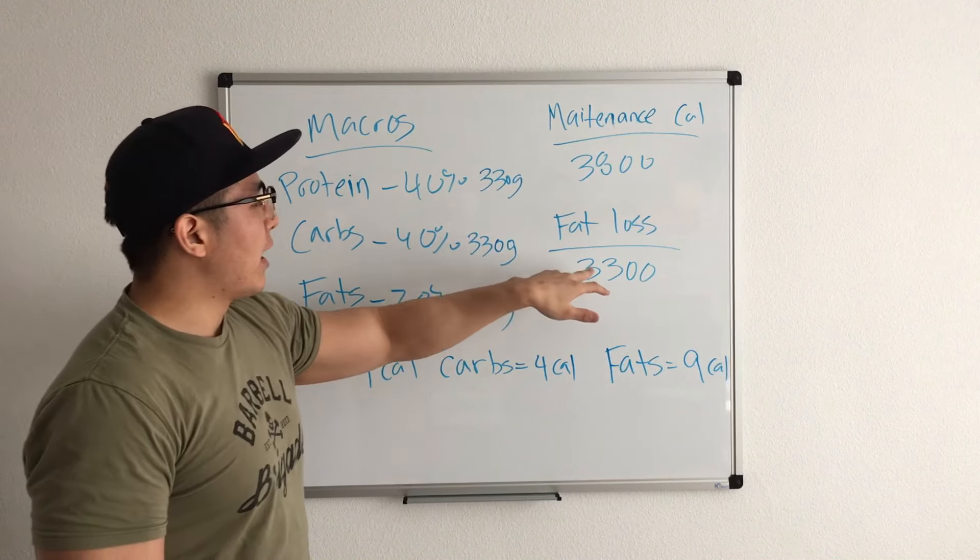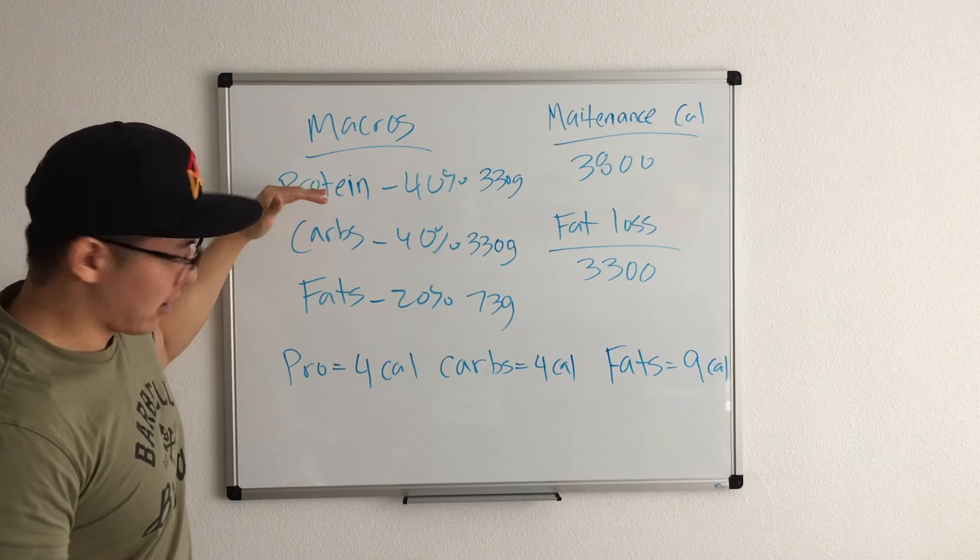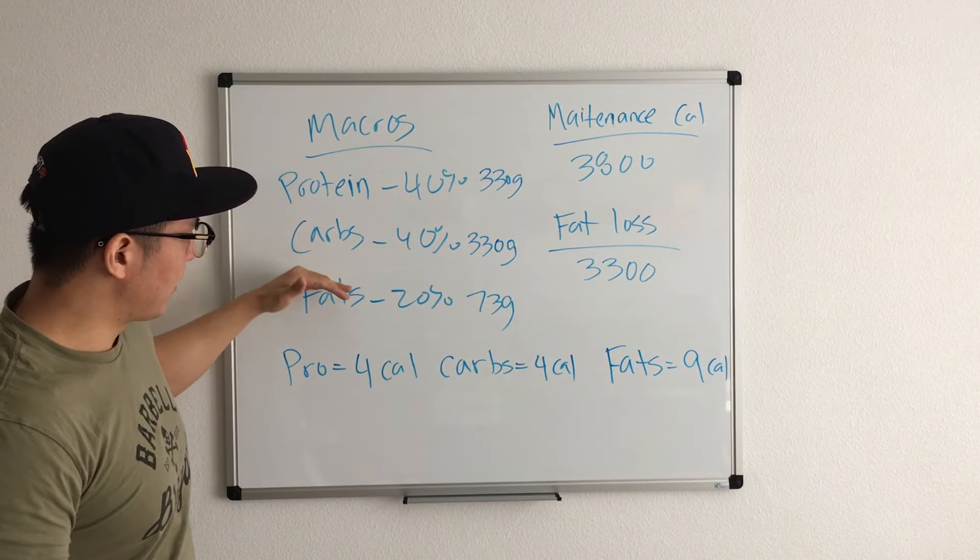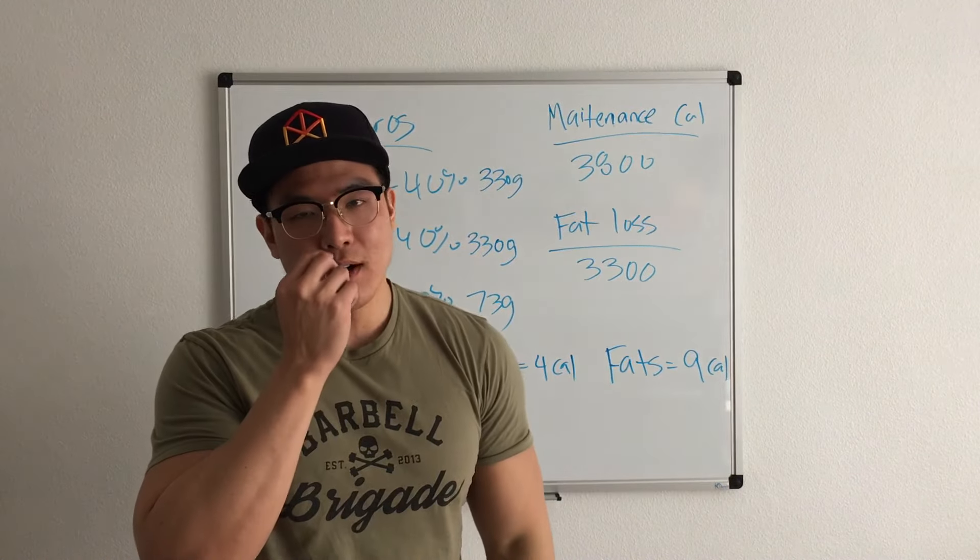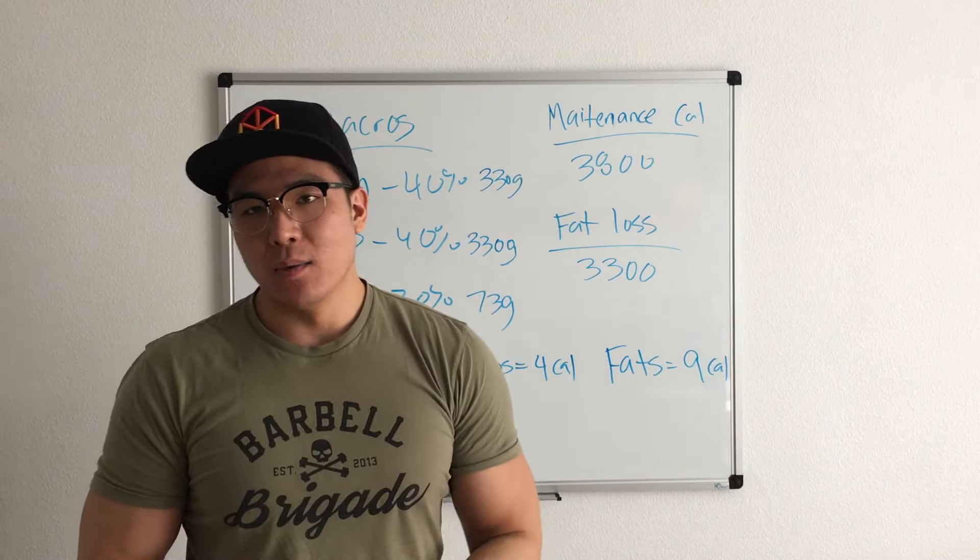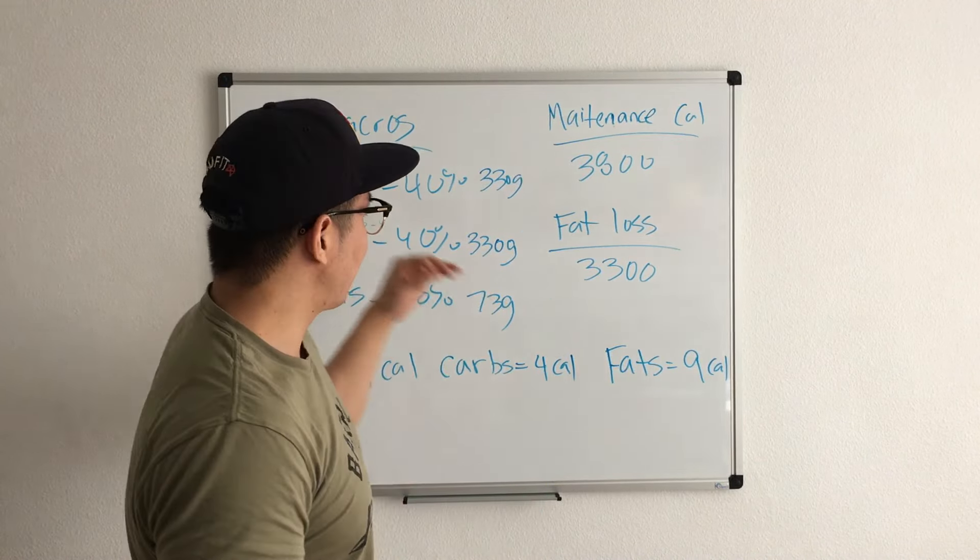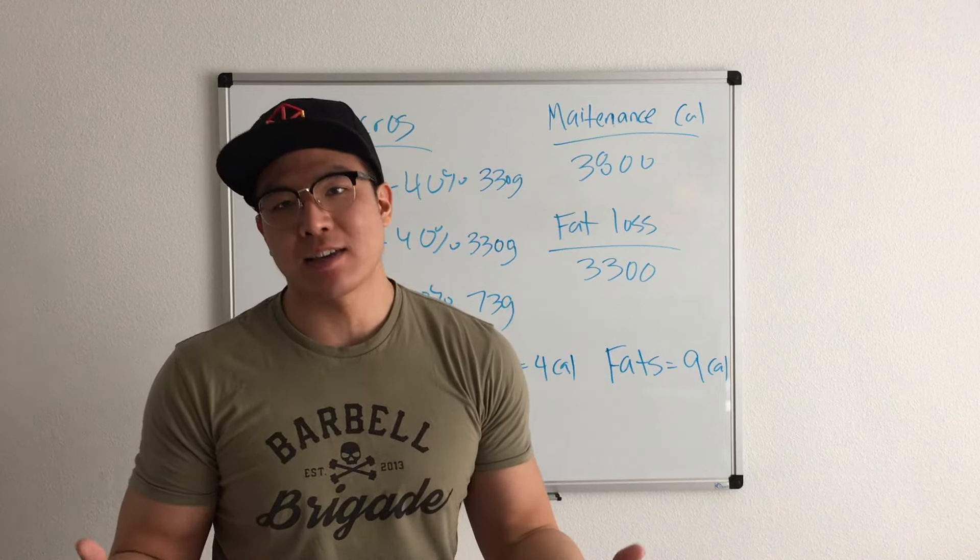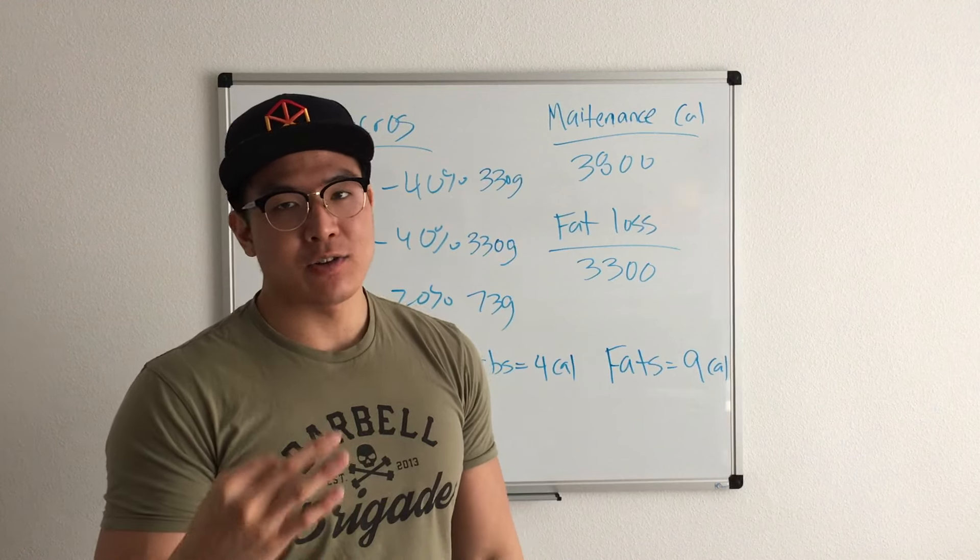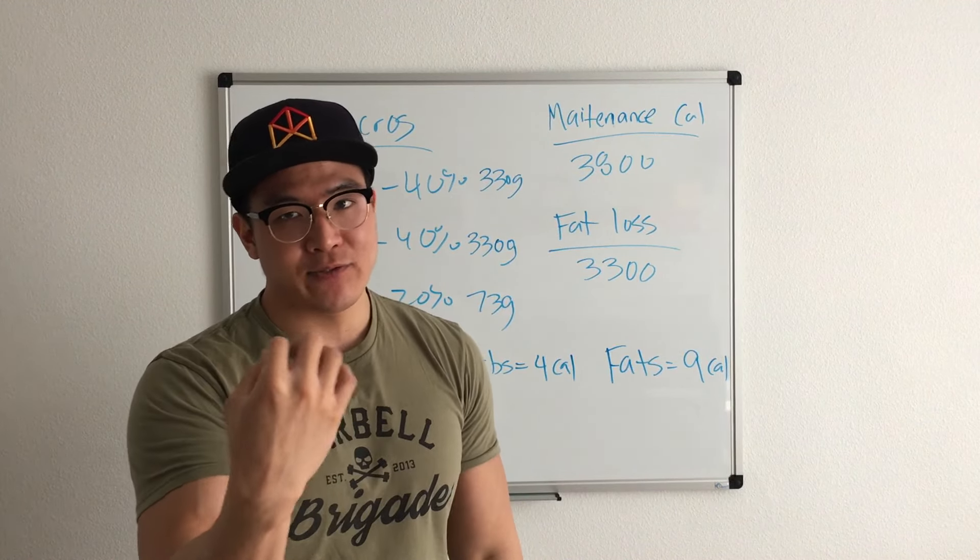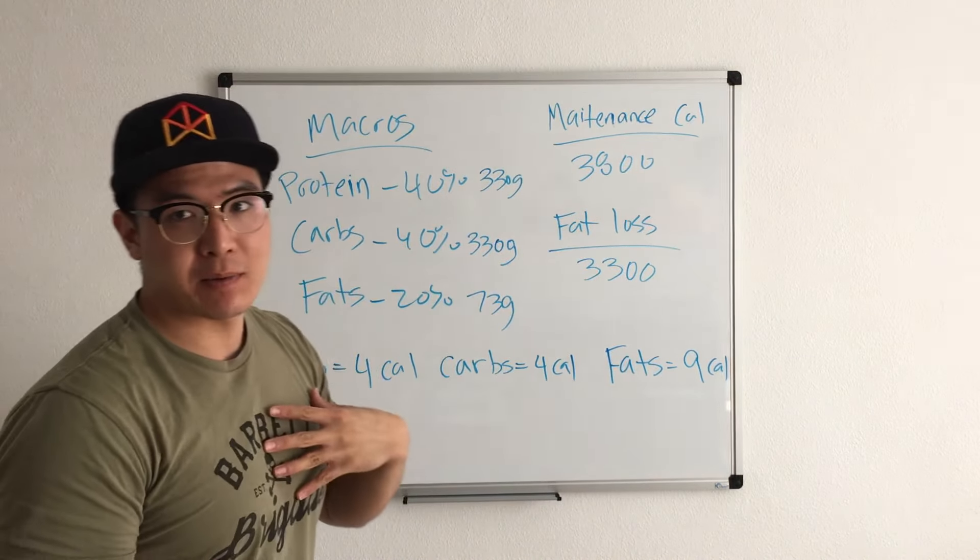Now, this 3,300 that the individual needs for fat loss is broken down to a set of macros. Macros is basically the breakdown of protein, carbs, and fats. Now, depending on your goal, you can break that however you want, but you could go on My Fitness Pal, which is an app I use to track all my foods. But in order to get these numbers, you could manually calculate it, but that's too much work. You could go to the My Fitness Pal site, log in through Facebook, and they calculate it for you.